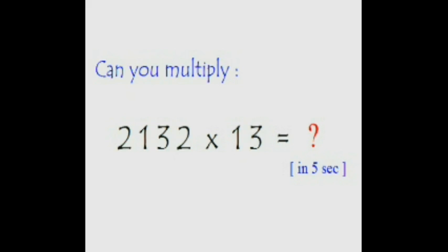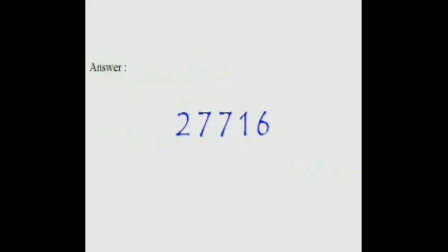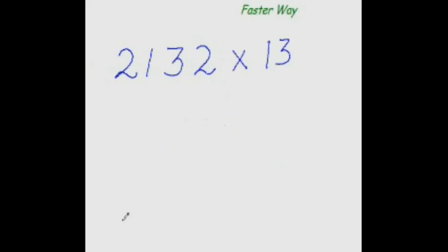The time is up. The correct answer would be 27,716. Using the method that we have learnt in the last video, so just copy this 2 as it is. Now since there is 3 here, so before you add this 2 to the next digit, you have to make it 3 times. So 2 three times is 6, and 6 plus 1 is 7.